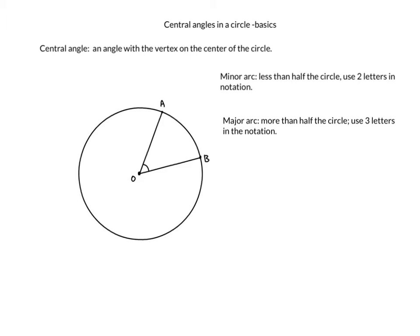If it helps you to write this down, the definition of what a central angle is is right here at the top of the screen. It's an angle with the vertex on the center of the circle. So if we look at our picture, the center of the circle is O, and it is also the vertex of this angle. The vertex just means it's where the two pieces of the angle come together. Another term you're going to hear is the intercepted arc. So angle AOB intercepts this arc, this part of the arc of the circle.